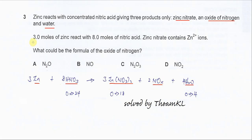The question gives us that 3 moles of zinc react with 8 moles of nitric acid. So the mole ratio now is 3 to 8. So we just put 3 and 8 here.